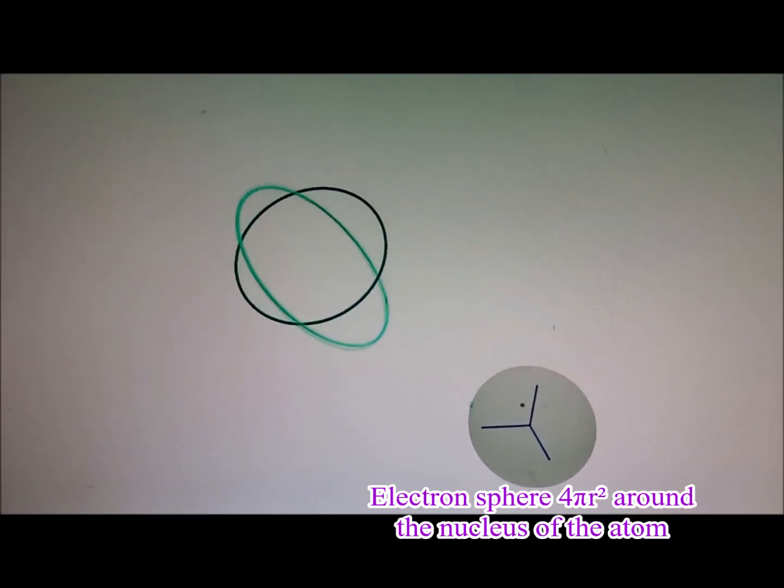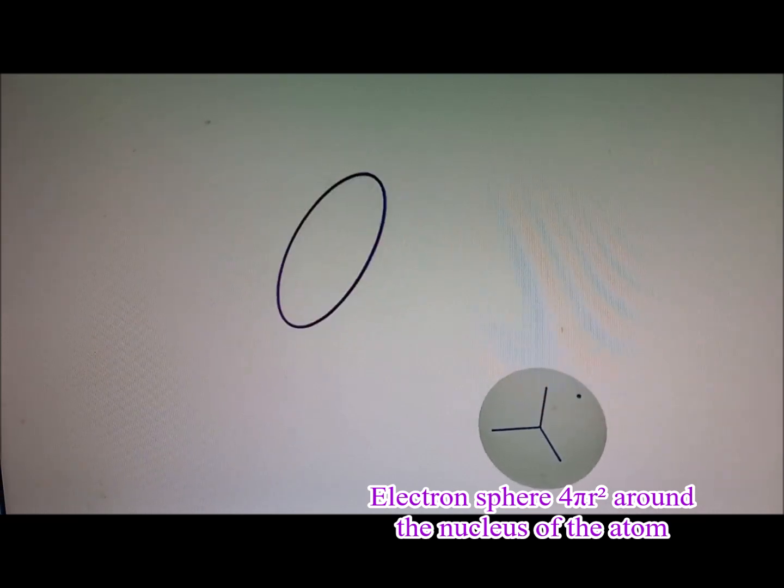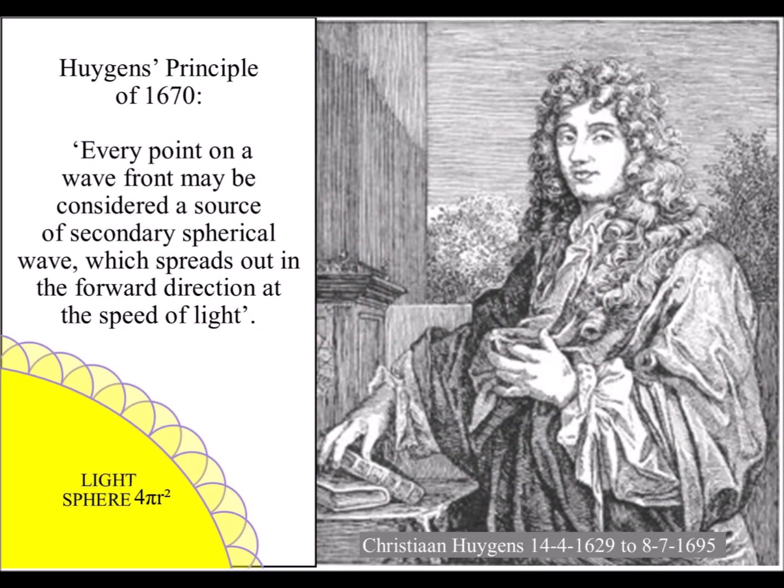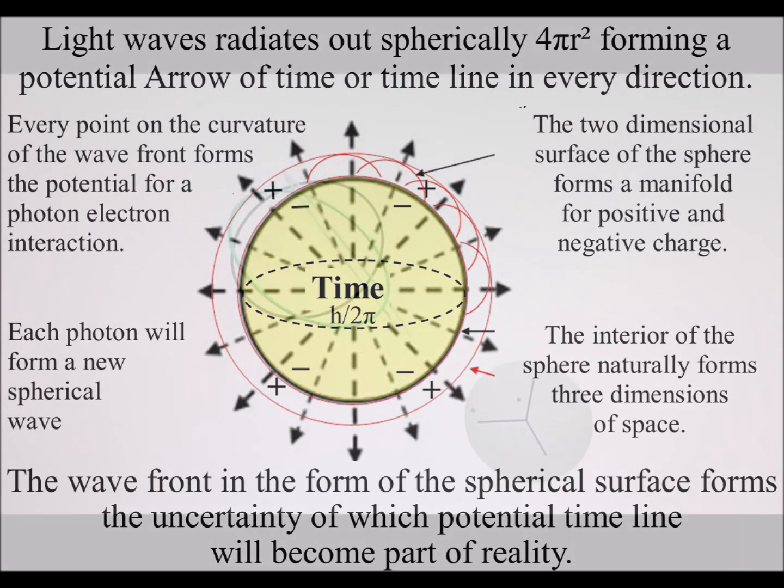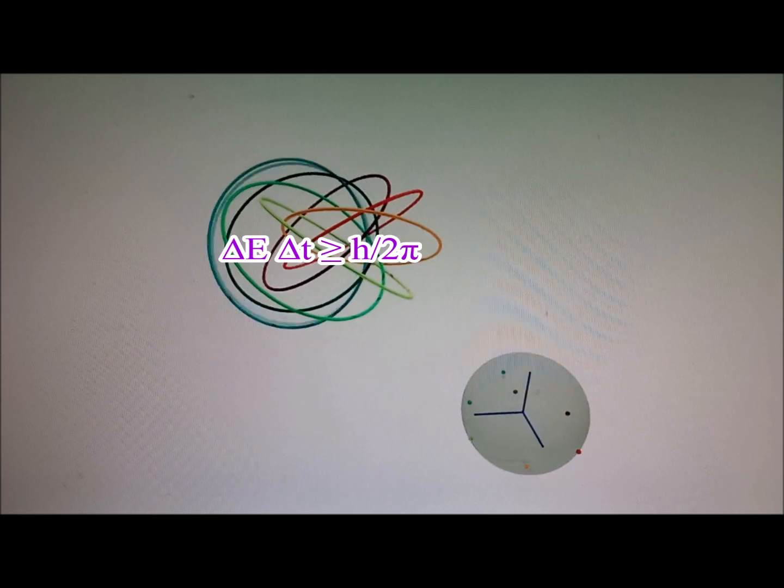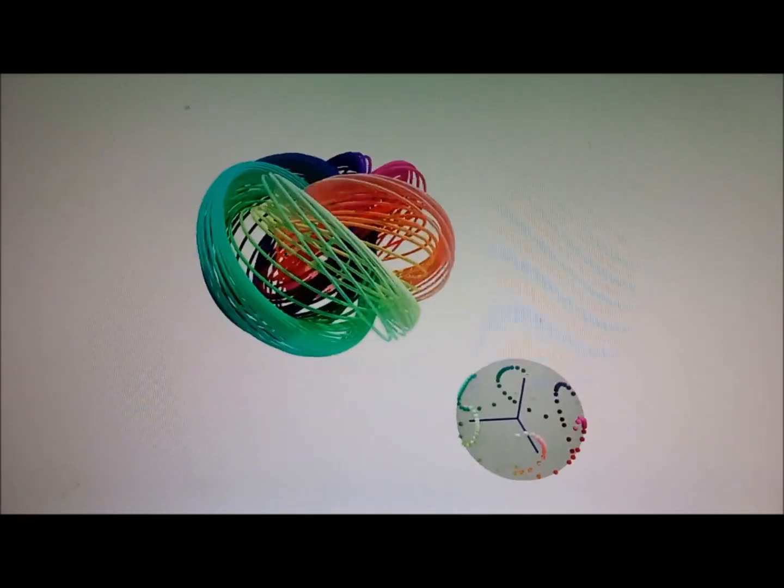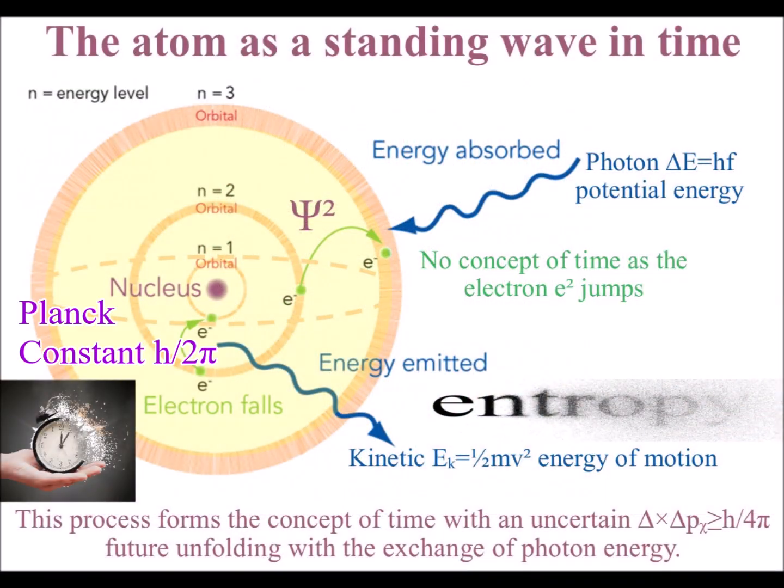The points on the surface of a sphere can represent a geometrical process based on Huygens' Principle of 1670 that says, every point on a wavefront has the potential for a new spherical light wave. We can think of the points on the curvature of the wavefront as potential light-photon-electron interactions or couplings.